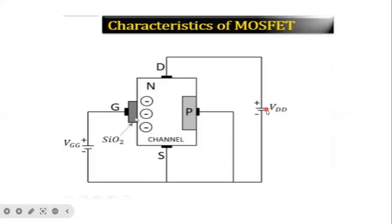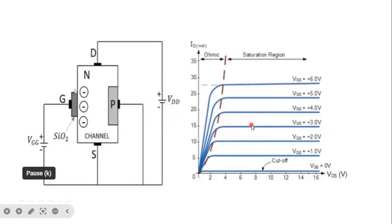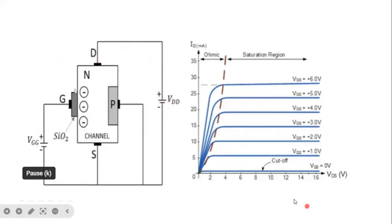The drain source voltage VDS is connected with positive terminal here. This creates the N-layer inside. This is the simple circuit diagram showing gate, drain, and source. The characteristics are VDS versus ID — that is, drain to source voltage versus drain current — plotted with respect to different values of VGS, the gate to source voltage.